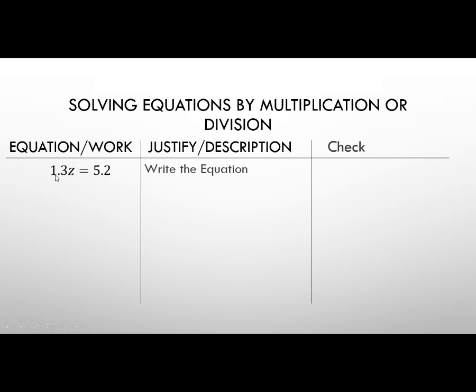Okay? Now, once again, we're using these inverse operations, so pay attention to what's happening right there. We are multiplying these two together. Even though you don't see the multiplication sign right there, 1.3 directly in front of a variable means 1.3 times z. So, the inverse of that is going to be division. This is the multiplicative property of equality. 1.3 divided by 1.3. Anything divided by itself is just 1. So, we have 1 times z. 5.2 divided by 1.3 is going to be 4. So z is equal to 4.